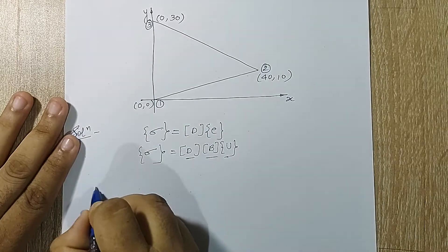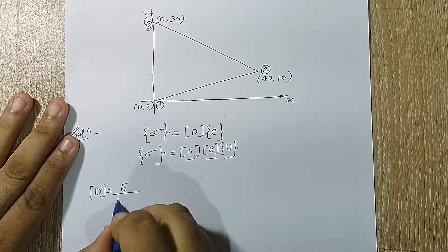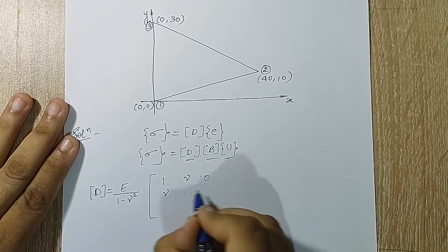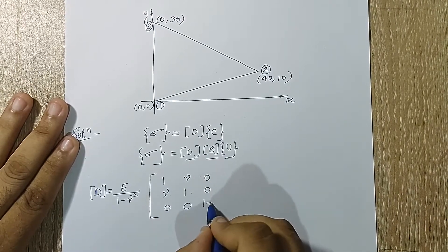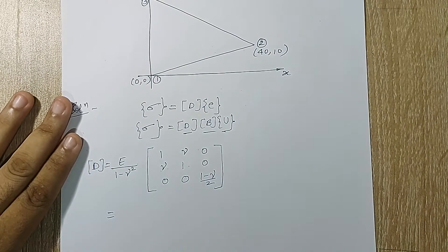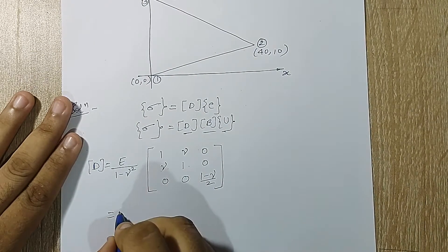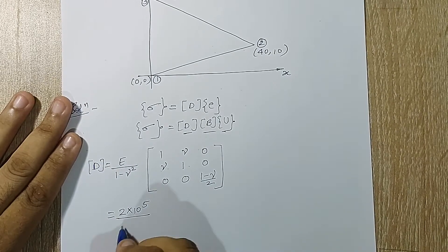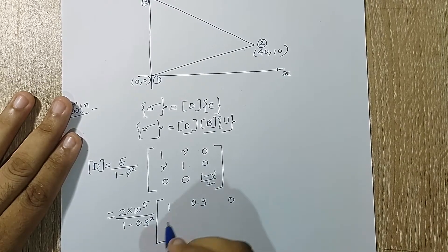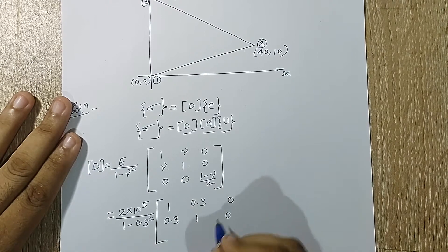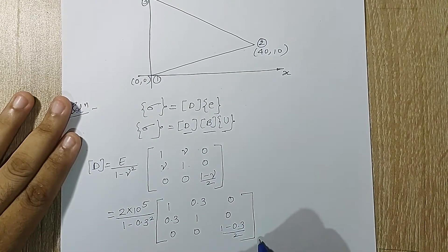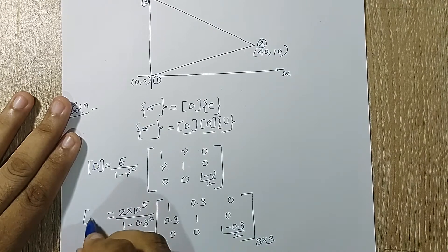I will start with calculation of D. This matrix D is given by E upon (1 minus nu squared) times the matrix [1, nu, 0; nu, 1, 0; 0, 0, (1 minus nu)/2]. Nu is Poisson's ratio and E is Young's modulus, given as 200 GPa, which I convert to 2 × 10^5 N/mm². Substituting values gives the 3×3 D matrix.